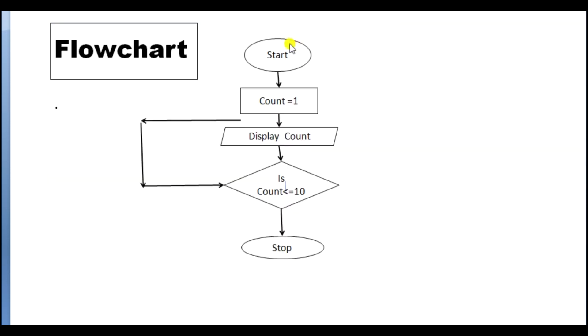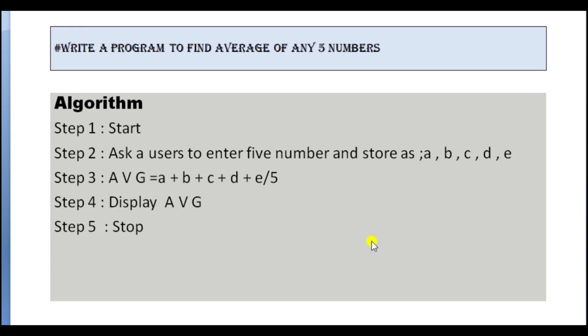Now in the flowchart, we have to start the program, then set count to 1. We have to display count. If count is less than 10, then we have to stop the program.